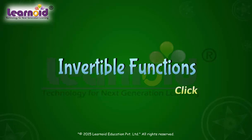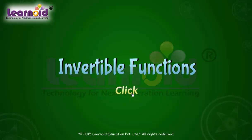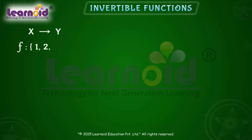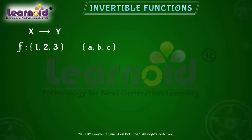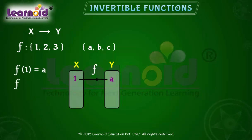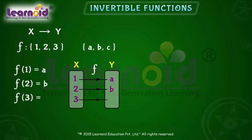Invertible Function. Let f be a function from {1, 2, 3} to {a, b, c}, and f is one-one and onto, such that f(1) = a, f(2) = b, and f(3) = c.